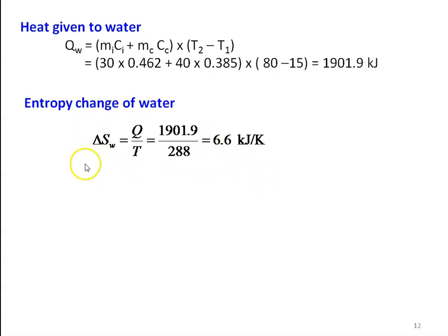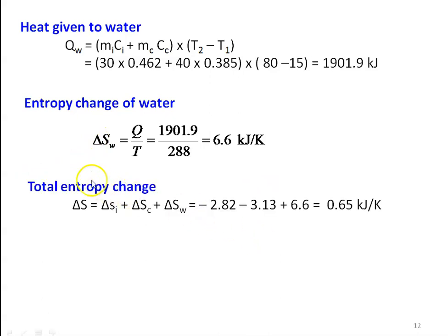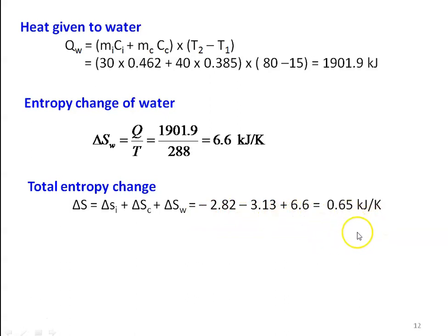Total entropy change: ΔS = ΔSi + ΔSc + ΔSw = −2.82 − 3.13 + 6.6 = 0.65 kJ/K. That is the final answer.